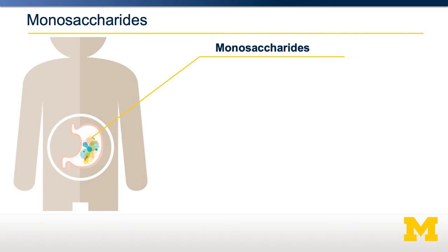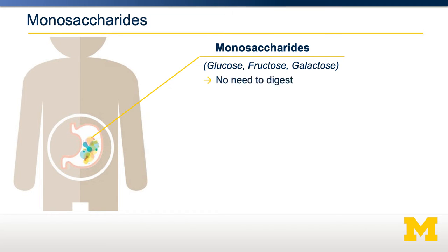The most basic unit of a carbohydrate is a monosaccharide, and the three most important monosaccharides for human nutrition are glucose, fructose, and galactose. If these are consumed, there's no need to digest them—they're already monosaccharides and ready to be absorbed. However, if they're combined in chains of two (disaccharides) or longer chains such as polysaccharides, we need to break them down in order to absorb them.